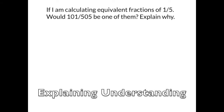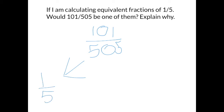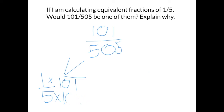I know that 101 over 500 is the exact same as 1 over 5, because if you do 1 times 101 and 5 times 101, that will give you 101 over 500. So it will be the exact same thing, just different.